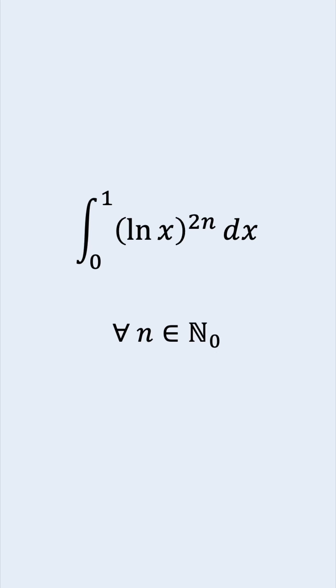How do we integrate the natural log of x raised to the power of 2n? The integral goes from 0 to 1, and n is any non-negative integer.